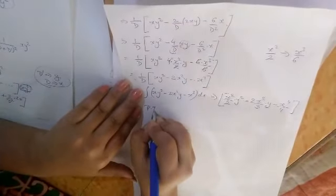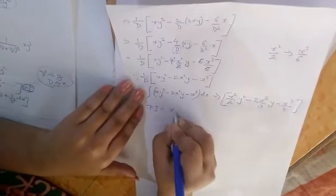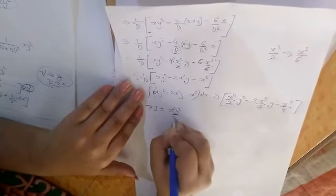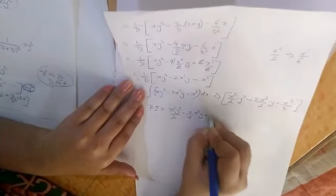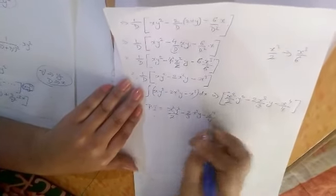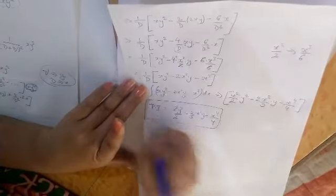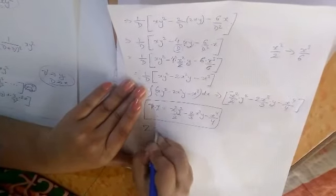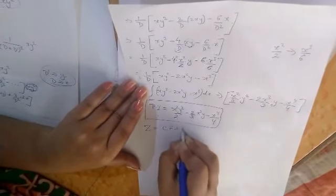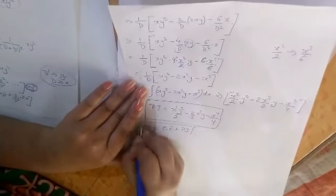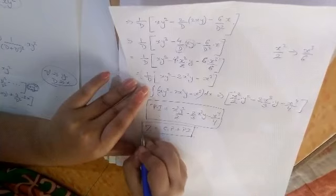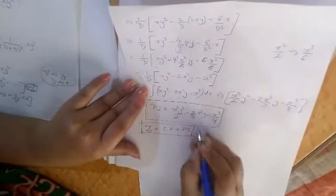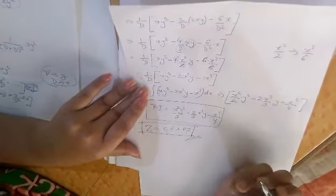So your PI for this function will be x²y²/2 minus 2x³y/3 minus x⁴/4. And at the last you can write the complete solution in form of z equals CF plus PI. So the CF of this question is very very easy, you have to do it yourself and the PI will be this. I hope you got the solution, thank you.